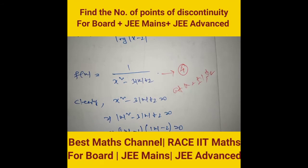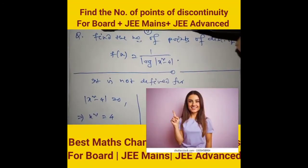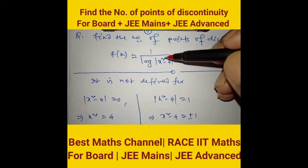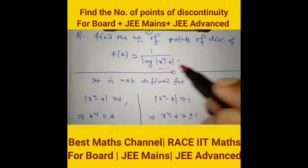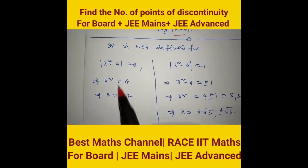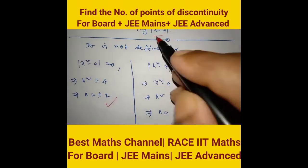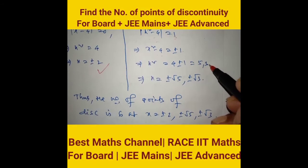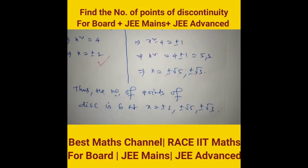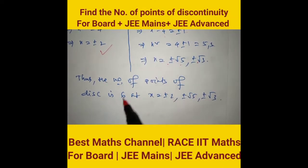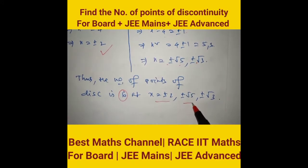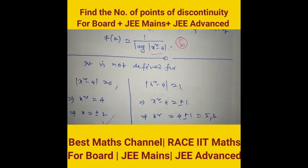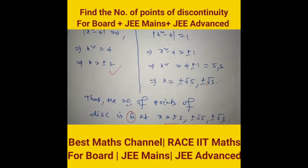Find the number of points of discontinuity of f(x) = 1 / log|x² − 4|. The function is undefined when log is zero (i.e., x² − 4 = ±1) or when x² − 4 = 0. From x² − 4 = 0: x = ±2. From x² − 4 = ±1: x² = 5 or 3, giving x = ±√5, ±√3. Number of points of discontinuity is 6 at x = ±2, ±√5, and ±√3.